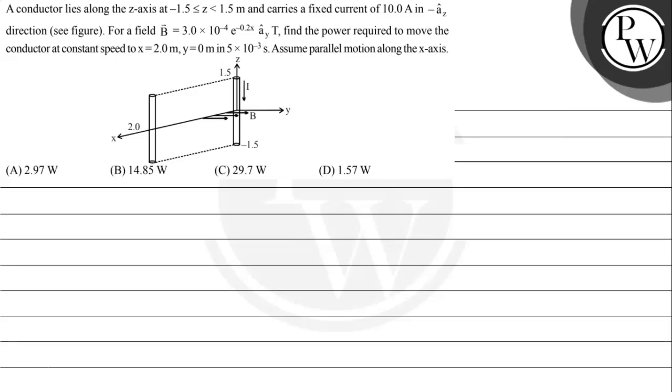Hello, let's read the event question. The question says a conductor lies along the z-axis at -1.5 ≤ z ≤ 1.5 meters and carries a fixed current